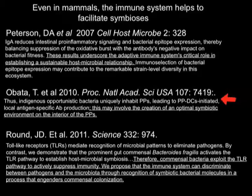Opportunistic bacteria uniquely inhabit Peyer's patches, leading to DC-initiated local antigen-specific antibody production. This may involve the creation of an optimal symbiotic environment on the interior of the Peyer's patches. Commensal bacteria exploit the toll-like receptor pathway to actively suppress immunity — it's supposed to activate immunity, but no, it's suppressing it. We propose that the immune system can discriminate between pathogens and the microbiota through recognition of symbiotic bacterial molecules in a process that engenders commensal colonization.